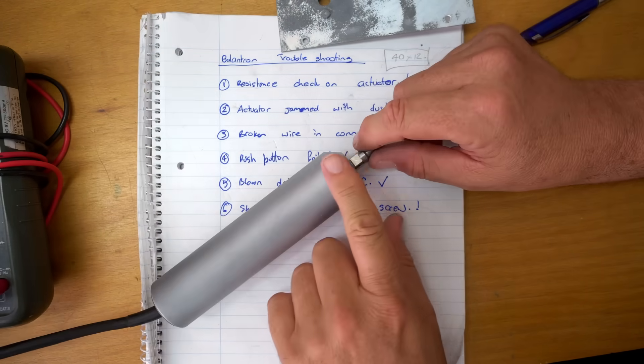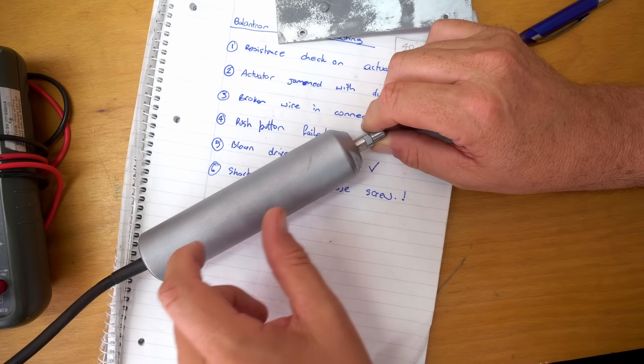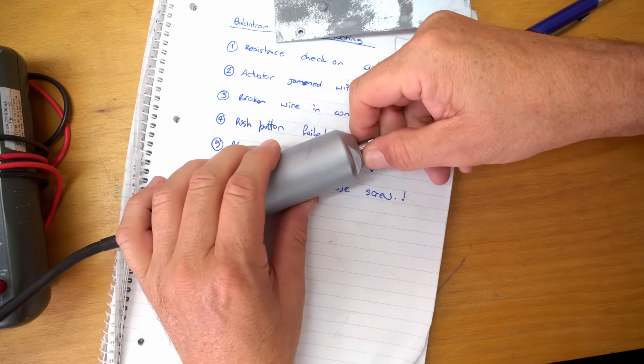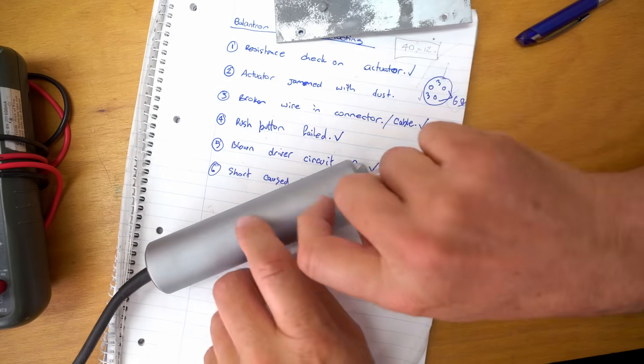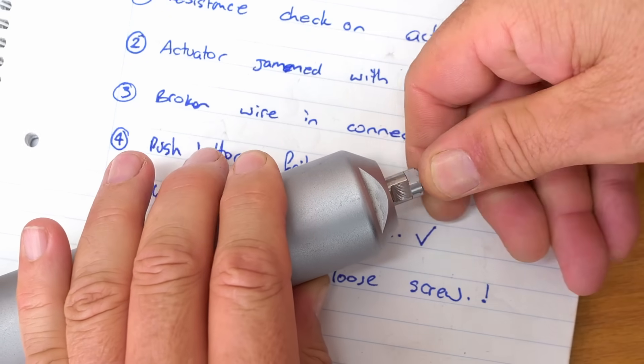You know the more I think about it if this is a double solenoid which I'm pretty sure it is with its two three ohm windings. I would assume it has some sort of a centering spring and then each actuator pushes out or in either of the two opposing directions.